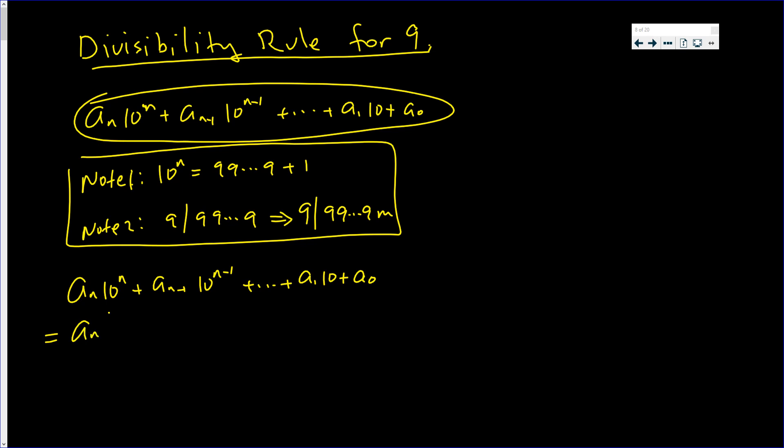This is a_n times... Now 10^n is a string of 9's plus 1, plus a_(n-1) times 10 to the power, which is going to be a string of 9's plus 1. 9 plus 1 is 10, plus a_0.